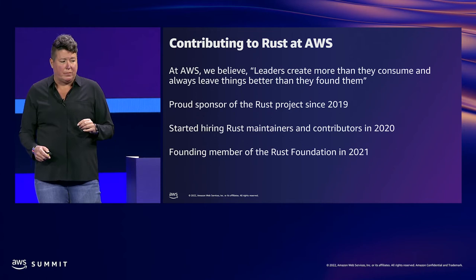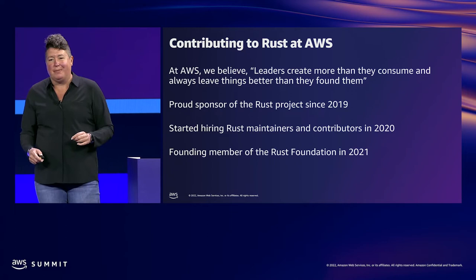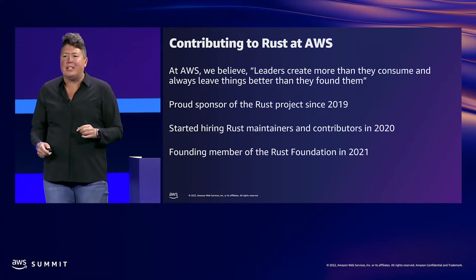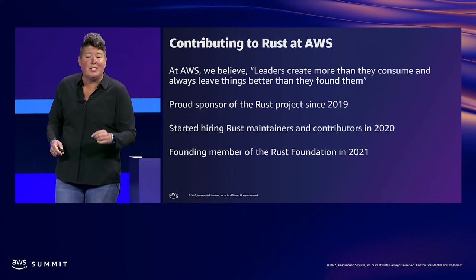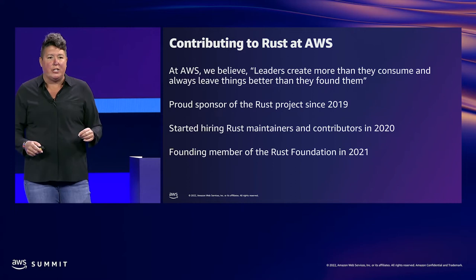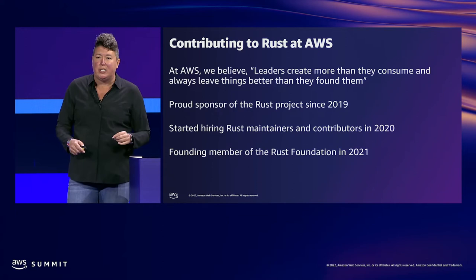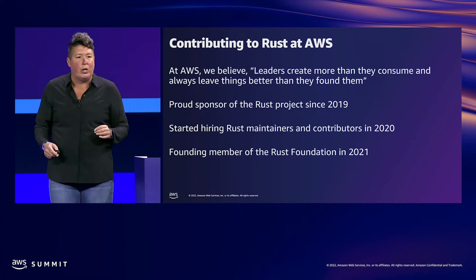At AWS, we believe leaders create more than they consume and they always leave things better than they found them. In 2019, AWS became a sponsor of the Rust project. In 2020, we started hiring Rust maintainers and contributors to work full-time building out the Rust landscape. In 2021, AWS partnered with Google, Microsoft, Mozilla, and Huawei to create the Rust Foundation, a nonprofit with a mission to support the Rust technology and community. AWS is investing in the sustainability of Rust, a language we believe we should be using to build sustainable and secure solutions.